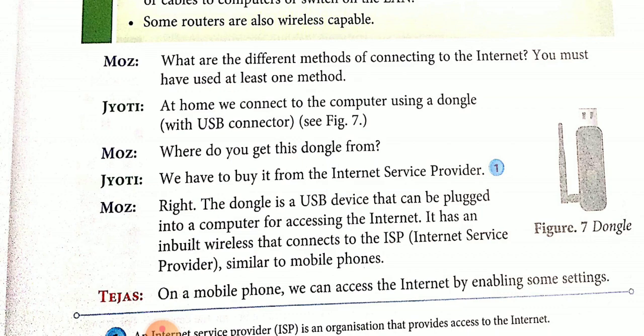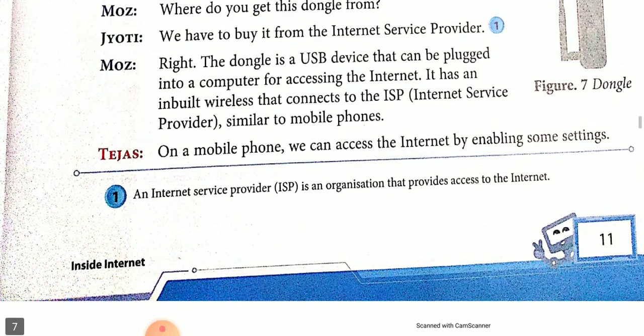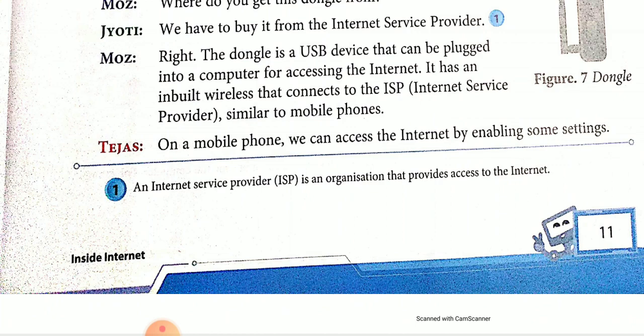What are the different methods of connecting to the internet? At home, we connected to a computer using a dongle with USB connector. Previously, we all were using a dongle — this is the part of connecting to a network with the use of a dongle. We have to buy it from the Internet Service Provider. The dongle is a USB device that can be plugged into a computer for accessing the internet. First, we put our dongle into our computer, then we install the dongle software, and then we connect to the internet.